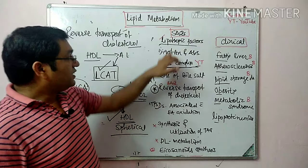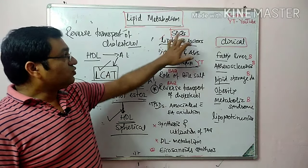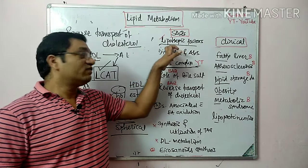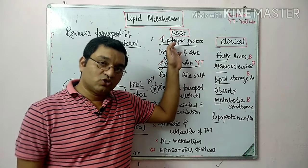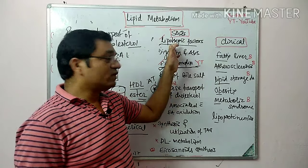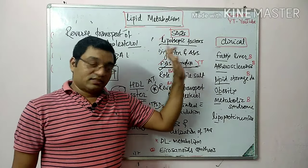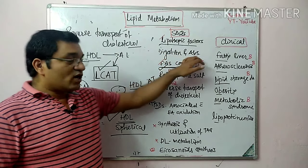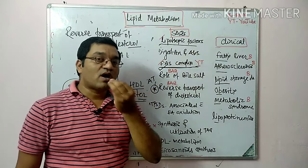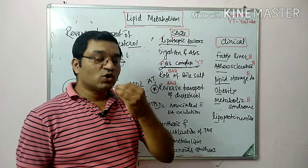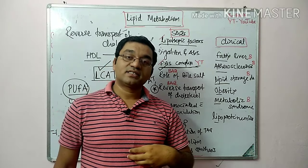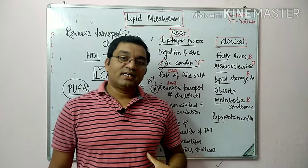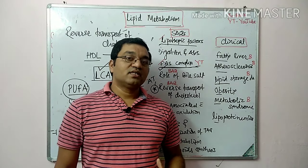In SAQs, lipotropic factors prevent the formation of fatty liver; these include choline, betaine, inositol, vitamin B12, methionine, and others. Digestion and absorption of lipids starts from the mouth with lingual lipase, then acid-stable gastric lipase, then pancreatic lipase, then intestinal lipase. Through the action of these lipases, lipids are converted into free fatty acids, glycerol, and monoacyl or diacyl glycerol.